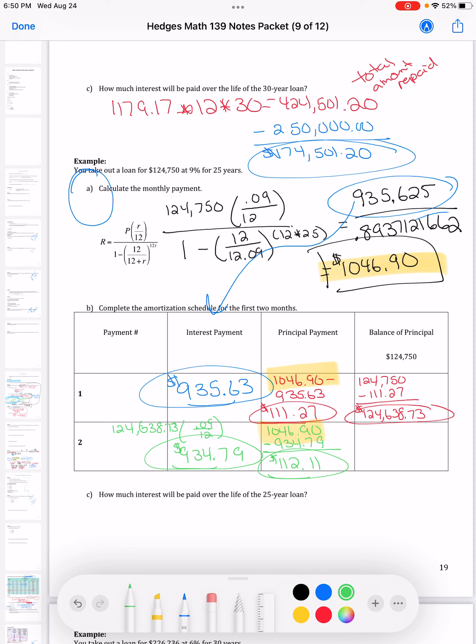At the beginning of the month, I owed that much money. I gave the bank, put some toward my principal. So now I owe a new amount. And there's my first two lines of my amortization schedule.